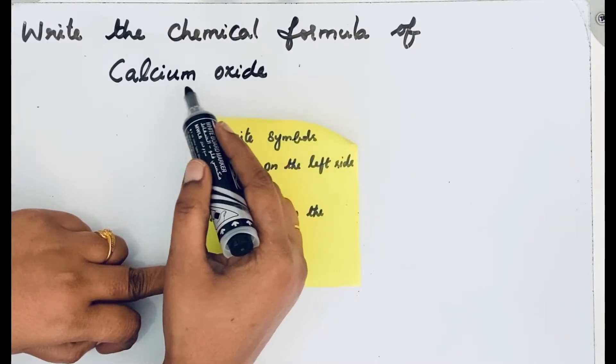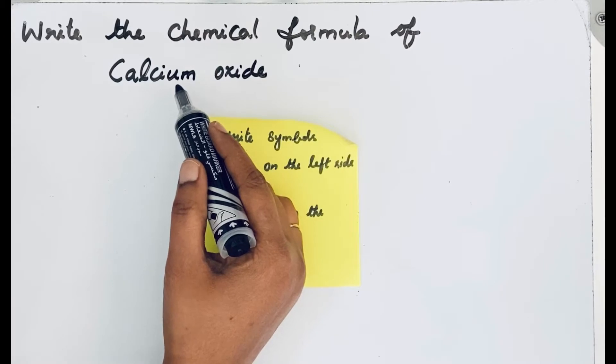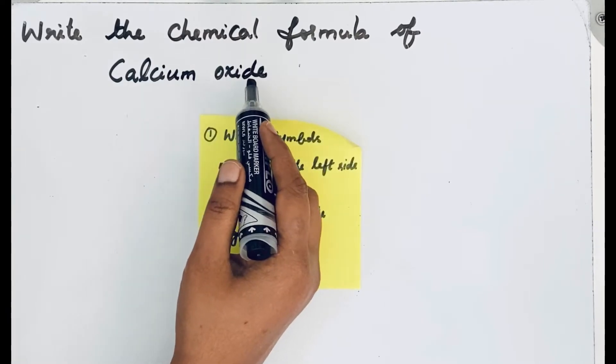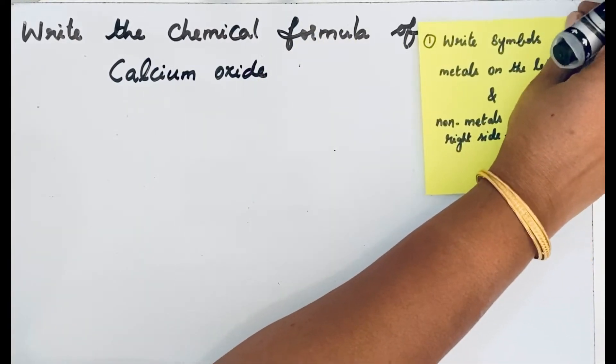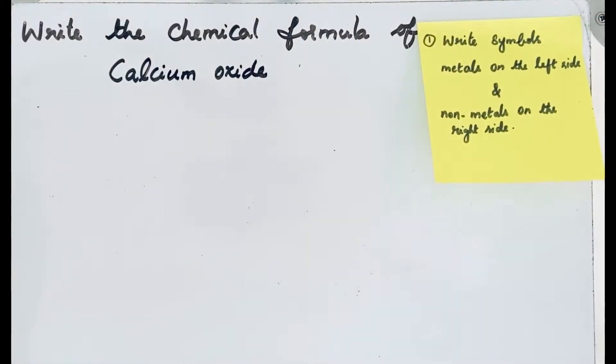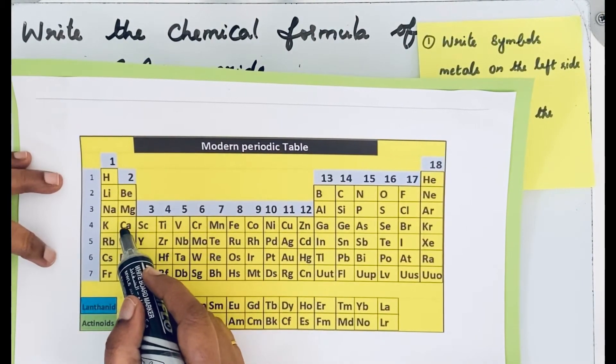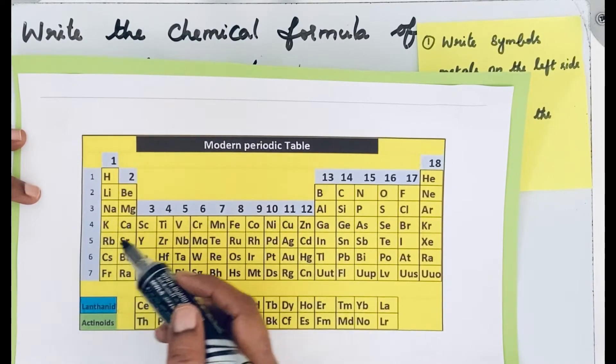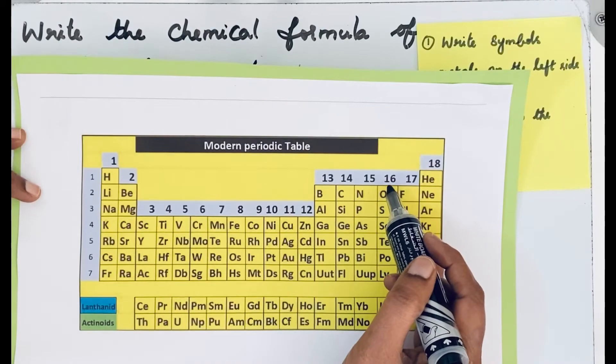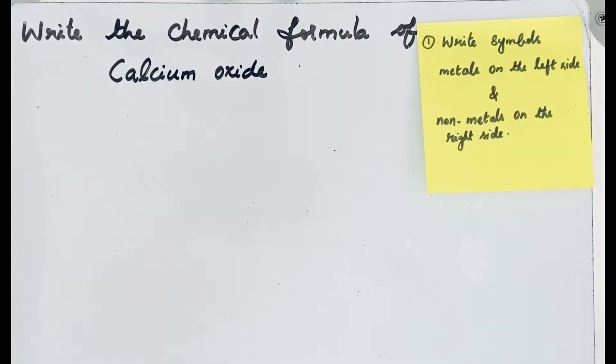It is an ionic compound - calcium ion and oxide is a non-metallic anion. Let us write the symbols. To know the symbols of calcium and oxygen, see here - calcium is in the second group, element Ca, and oxygen is in the 16th group. The first step is writing the symbol of metallic ion and non-metallic anion.